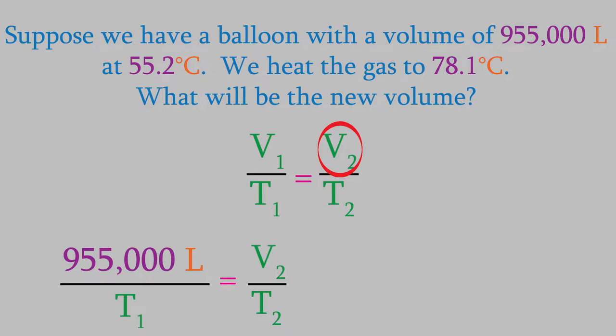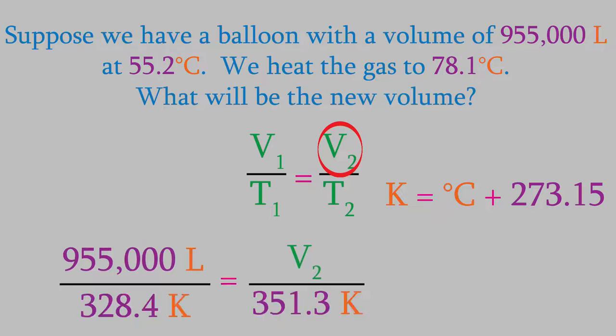As we saw in the last video, we convert to Kelvin by adding 273.15 to the Celsius temperature. So, we're starting at 328.4 Kelvin and ending at 351.3 Kelvin. I'll also convert that large volume into scientific notation, just to make it a little shorter. When we perform the calculation, we find that V2 is 1.02 times 10 to the 6 liters.